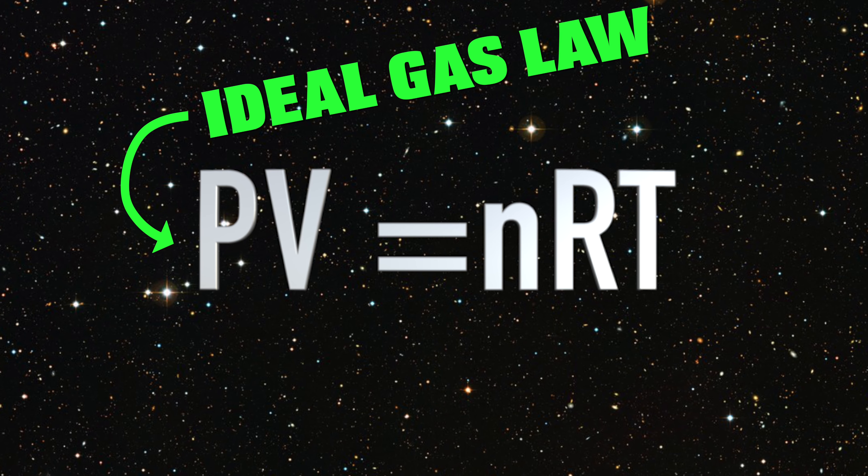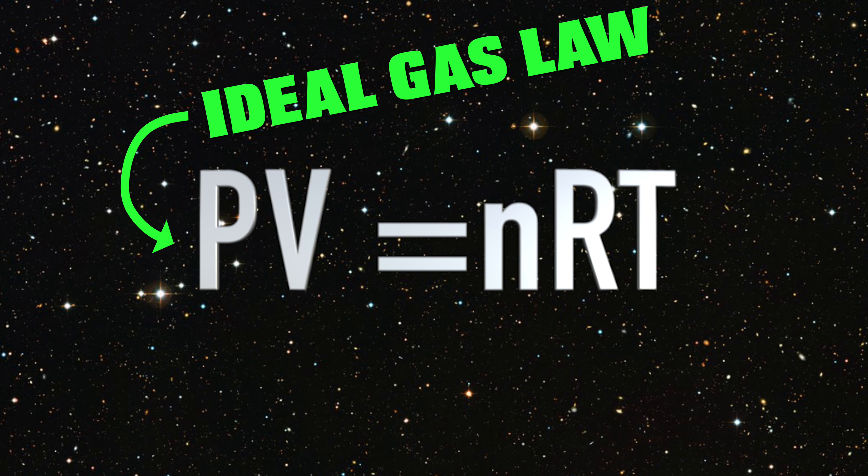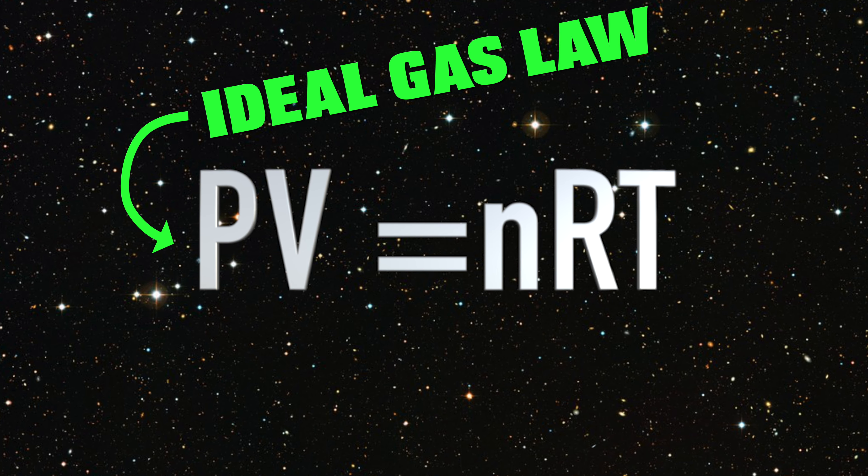PV equal to nRT, commonly known as the ideal gas law. In this video, we will show you where this equation comes from and how we can use it.